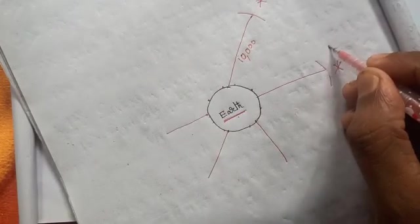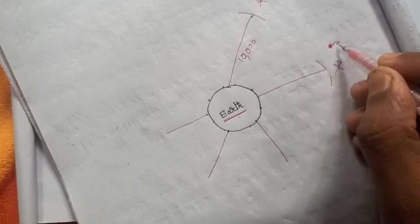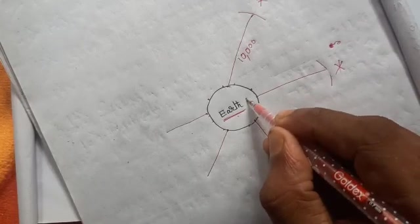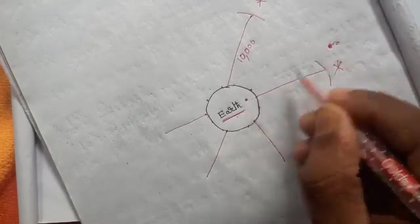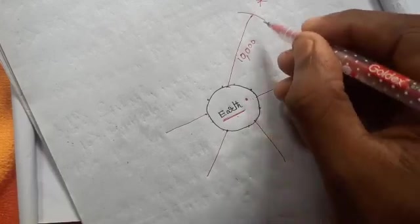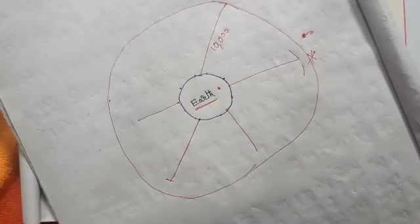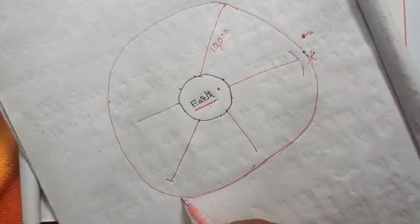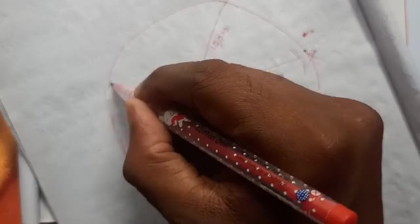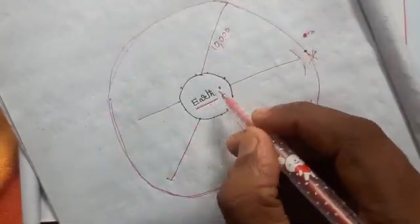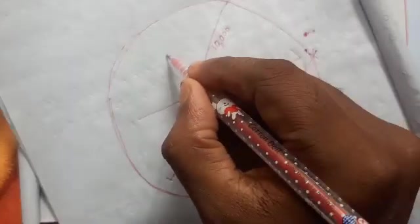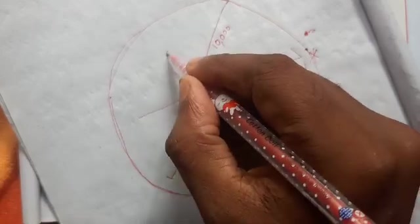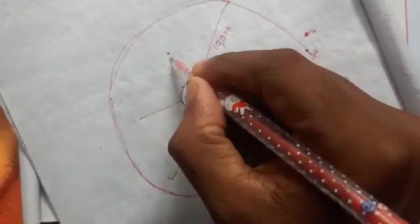If something is there it will keep on flying because there's no pulling power of the Earth. Earth will not pull. Inside this 10,000 km you will find gravitational pull of the Earth. If something is there, the Earth will pull down towards the Earth.